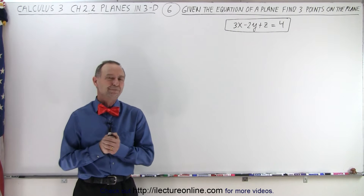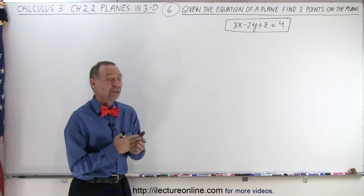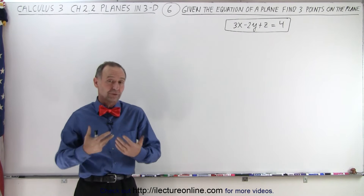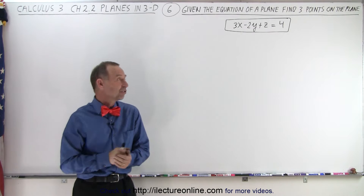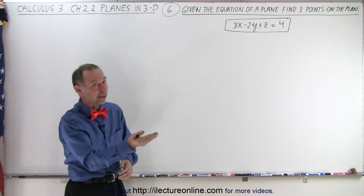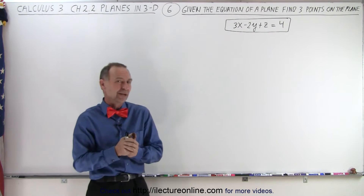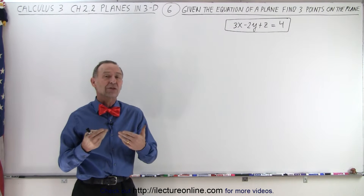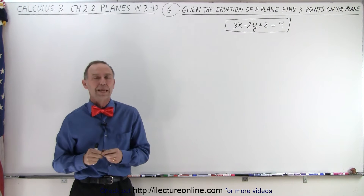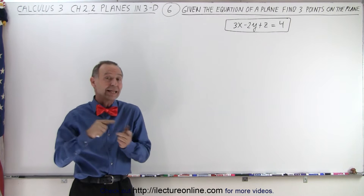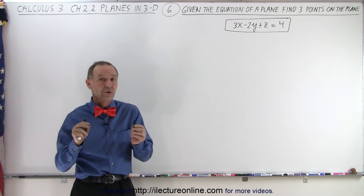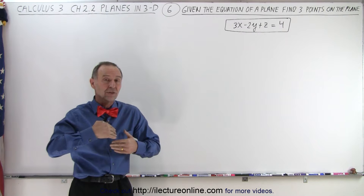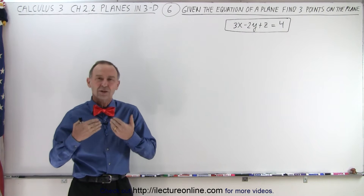Welcome to our lecture online. In this video, we're going to take the equation of a plane — the general form, except we have positive 4 on the right side of the equal sign instead of minus 4 on the left side. We're going to use that equation to find 3 points on that plane. Then in the next video, we're going to take those 3 points to see if we can get the original equation back, so you can see how this works.